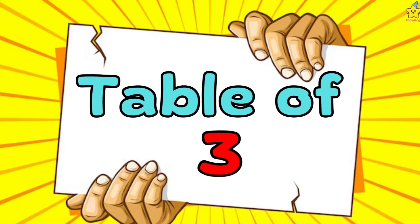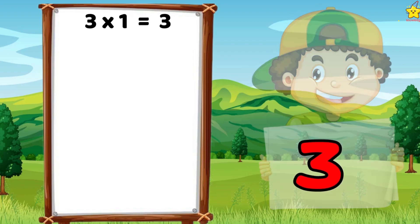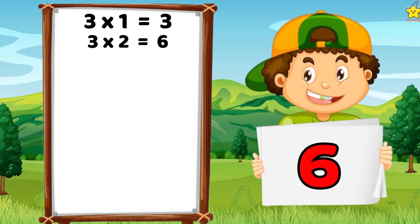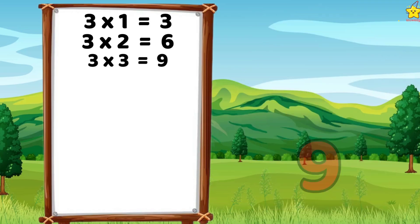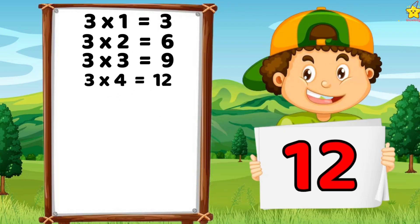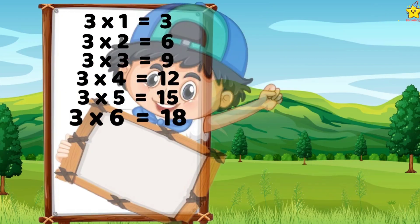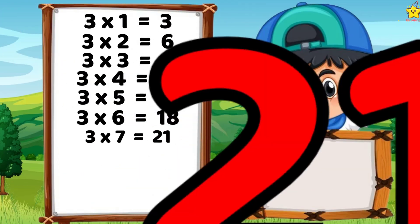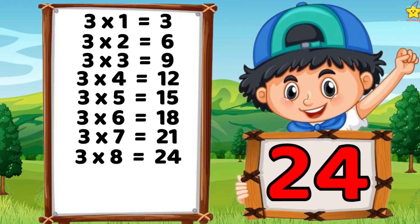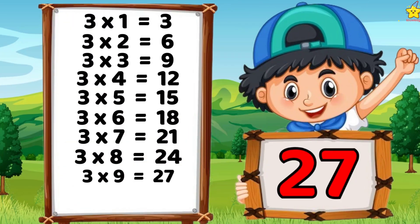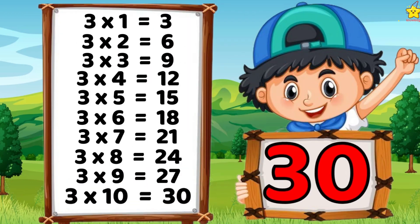Table of three. Three times one is three. Three times two is six. Three times three is nine. Three times four is twelve. Three times five is fifteen. Three times six is eighteen. Three times seven is twenty-one. Three times eight is twenty-four. Three times nine is twenty-seven. Three times ten is thirty.